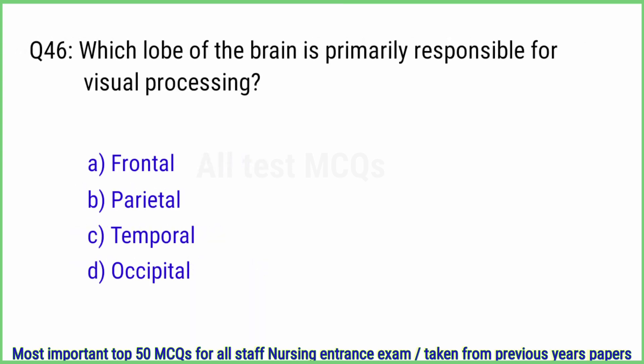Q46. Which lobe of the brain is primarily responsible for visual processing? The right answer is option D, occipital.